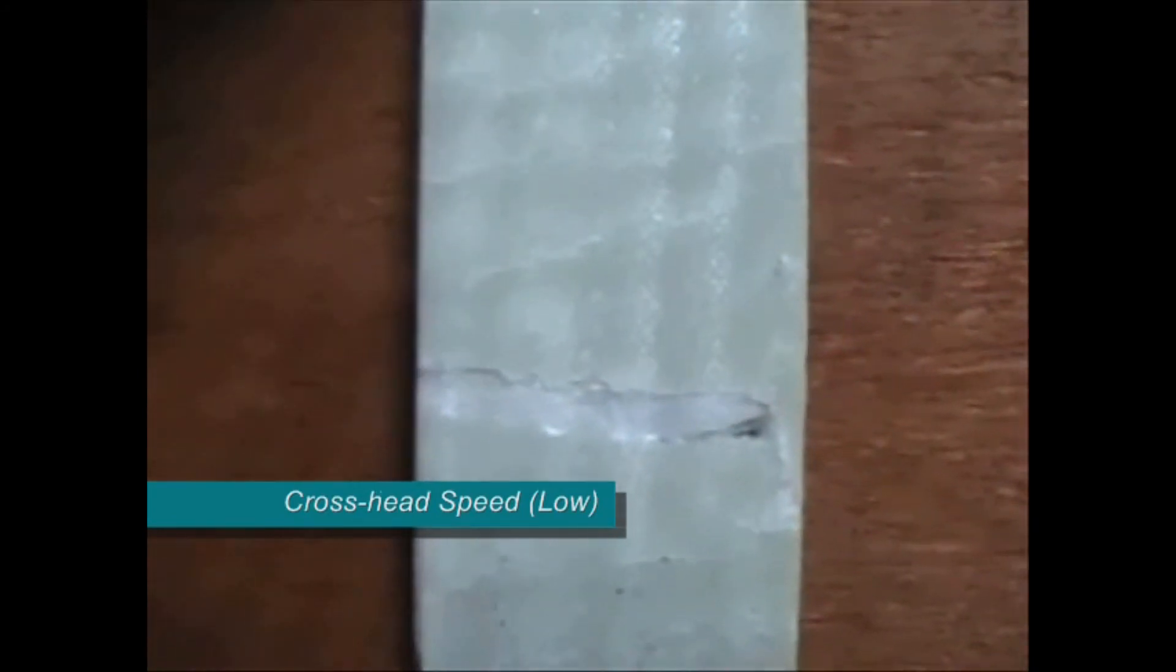For the low crosshead speed, which was the first test, we can see that the failure takes place by delamination. That means the fiber and the matrix delaminates. Here there is no shearing like you see in metals or there is no fracture like you see in ceramics.